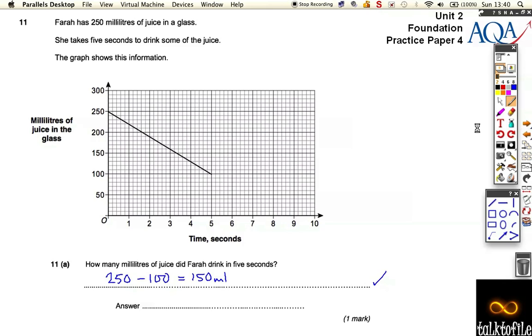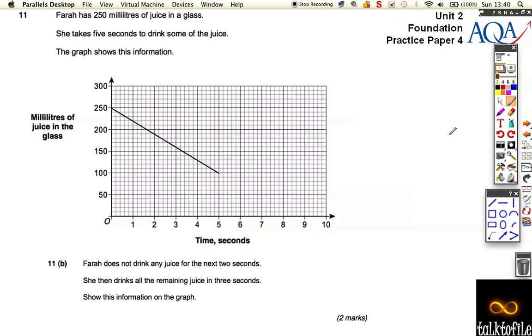Let's look at the next bit. Okay, so it says the same information again except the question at the bottom has now changed. Farah does not drink any juice for the next two seconds. She then drinks all the remaining juice in three seconds. Show this information on the graph.